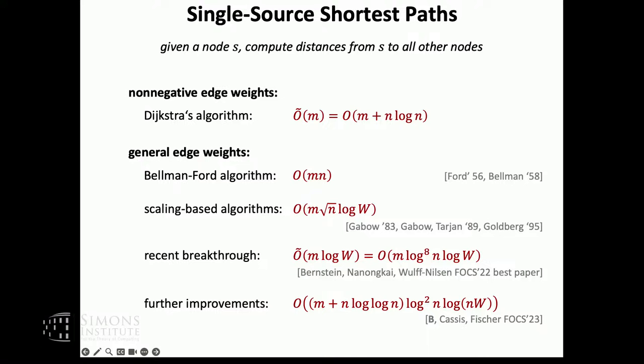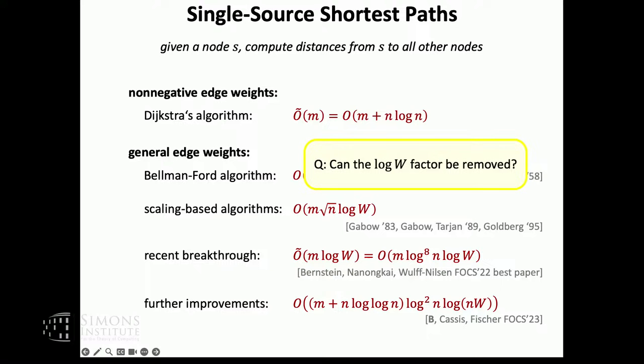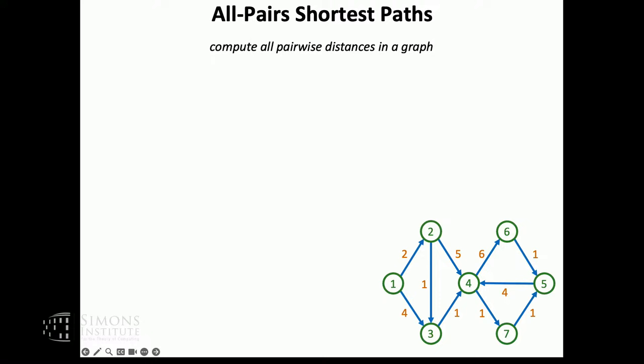We further improved this recently — it had about nine log factors, and we brought it down to about three log factors, which is still not super practical but getting closer. The big open problem is whether this log W can be removed to get a strongly polynomial algorithm that is near-linear in the number of edges. Then of course we can also talk about all-pairs shortest path.